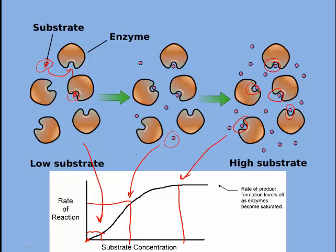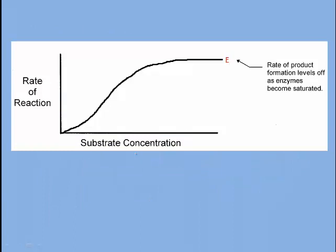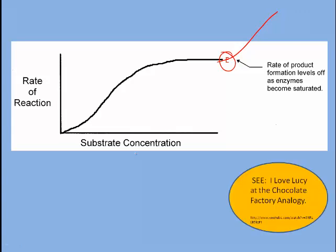But there comes a point where adding any more substrate is not going to be helpful, because the enzymes are completely busy doing their job. So we call this the point at which the enzymes become saturated. What could you do if you wanted to increase the rate of reaction and your enzymes were basically occupied with all the substrate they could possibly manage? The only way that you could increase this rate of reaction is if you added more enzymes at this point to accommodate all those substrates. Now there's a great video you should watch. It's the I Love Lucy at the Chocolate Factory video, and it's a great analogy to enzyme saturation.